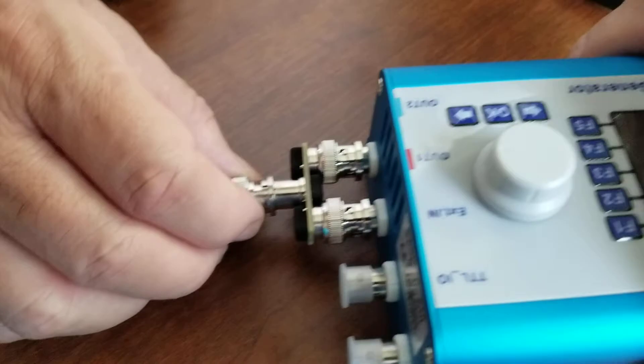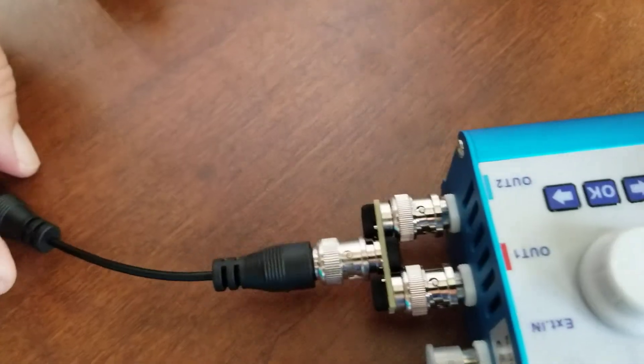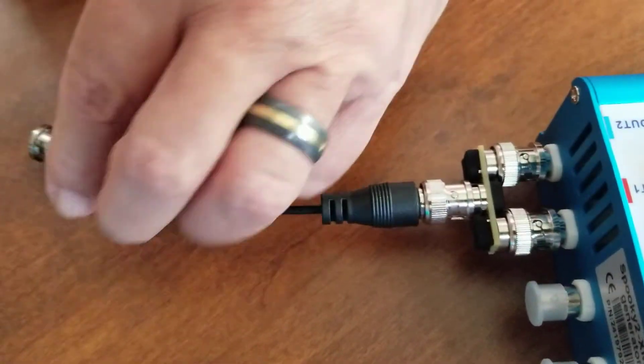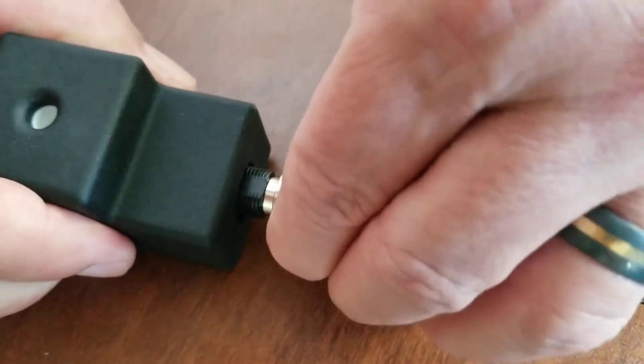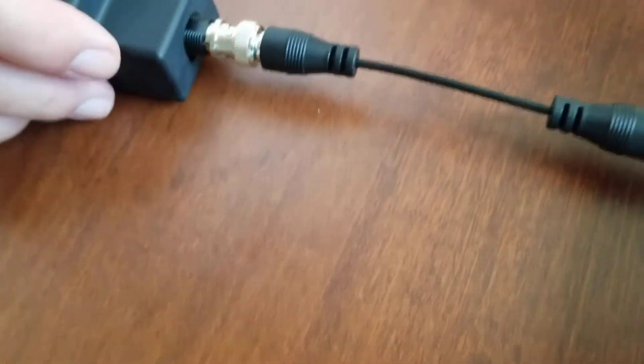We're going to connect the short BNC cable, British Navy connector. It's only six inches long. And we're going to connect the other end of the cable to the remote. So you're pushing in and then turning to the remote. Like I did all the other times.